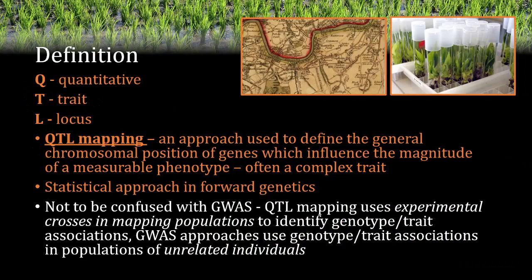To define what a QTL is, we should first define what QTL stands for — in this case, quantitative trait loci. QTLs are areas within the genome which contribute to the magnitude of a measurable trait, often influenced by more than one gene, also known as a complex trait. A good example in plants is height or drought tolerance. QTL mapping is exactly what it sounds like: an approach used in genetics to define the chromosomal position of these QTLs.